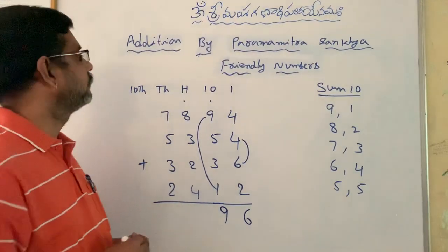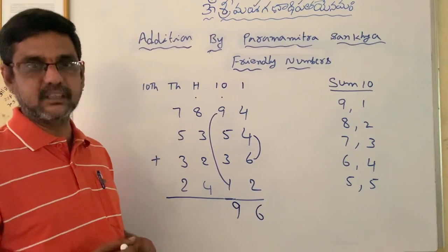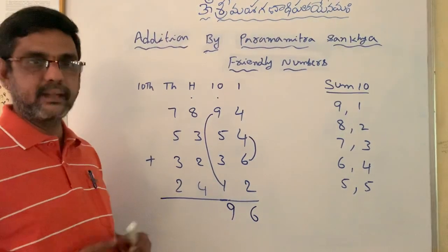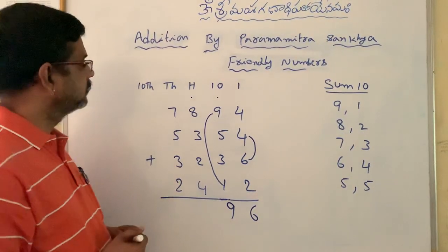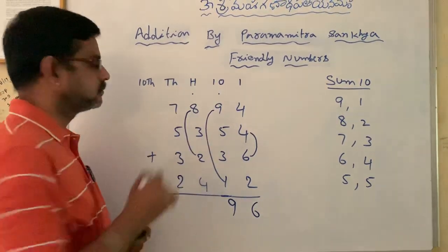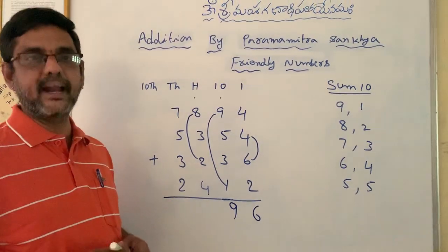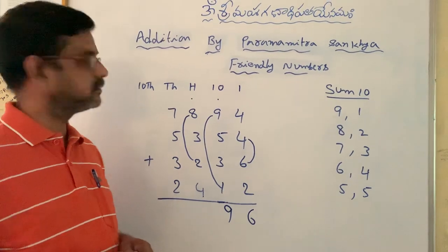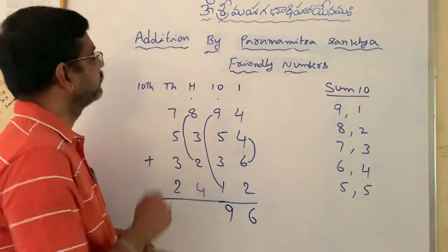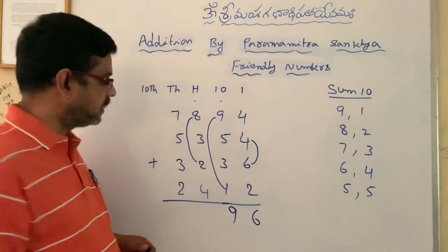Now verify the hundreds place column. Is there any friendly number in that column? Yes — 8 and 2. So leave those two numbers and add the remaining numbers including the dot: 3 plus 4 equals 7, plus 1 dot equals 8.